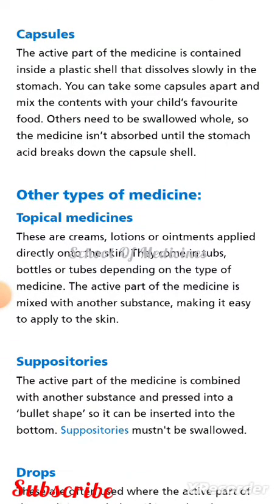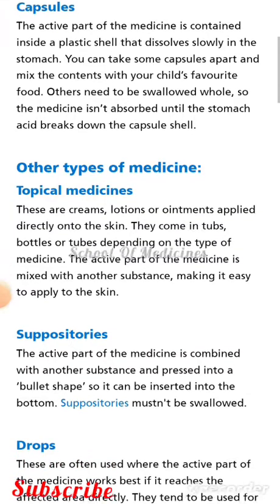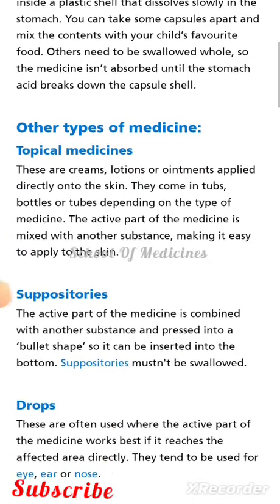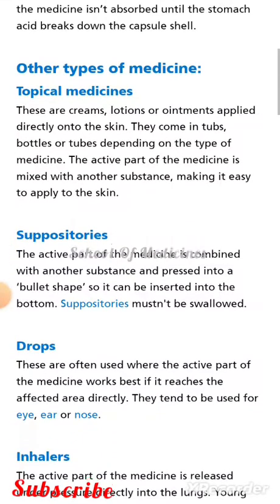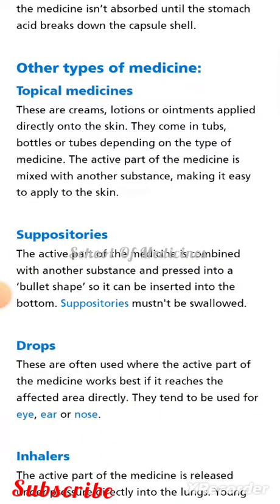Topical medicines: these are creams, lotions, or ointments applied directly onto the skin. They come in tubs, bottles, or tubes depending on the type of medicine. The active part of the medicine is mixed with another substance, making it easy to apply to the skin.